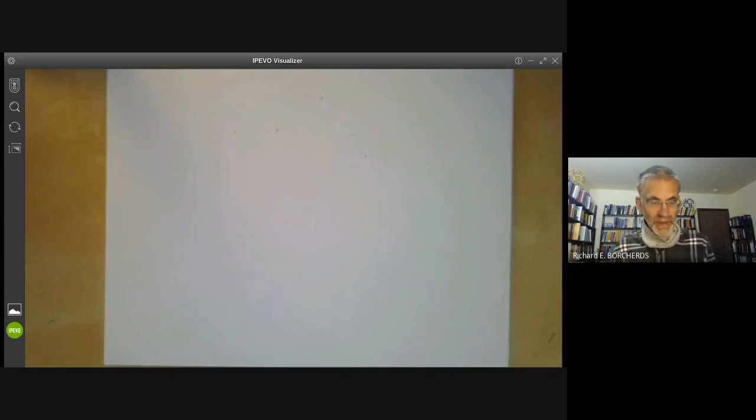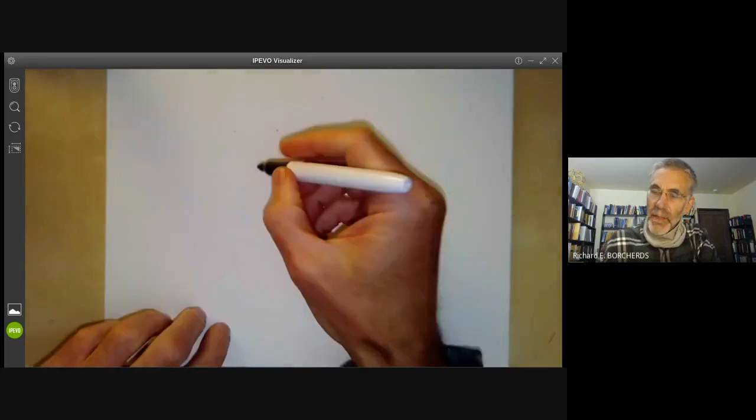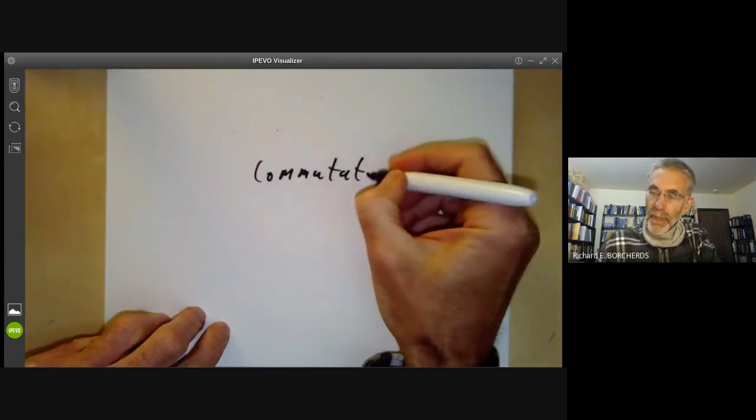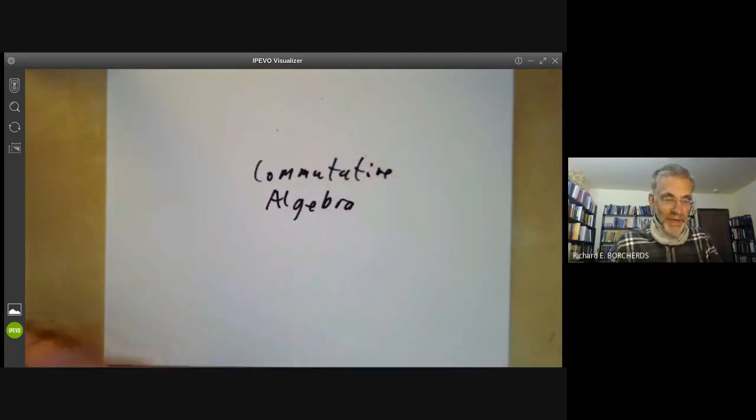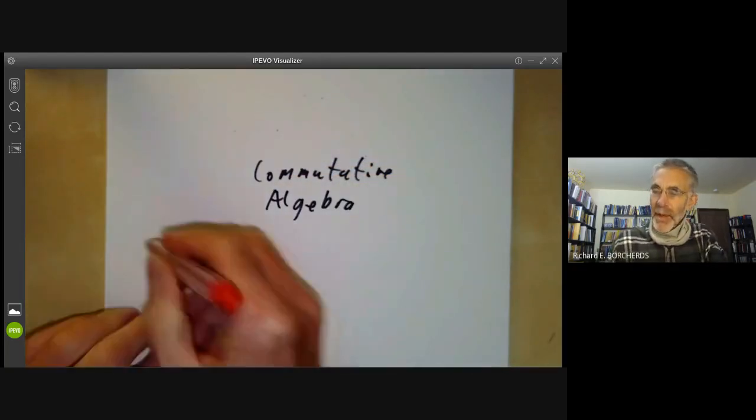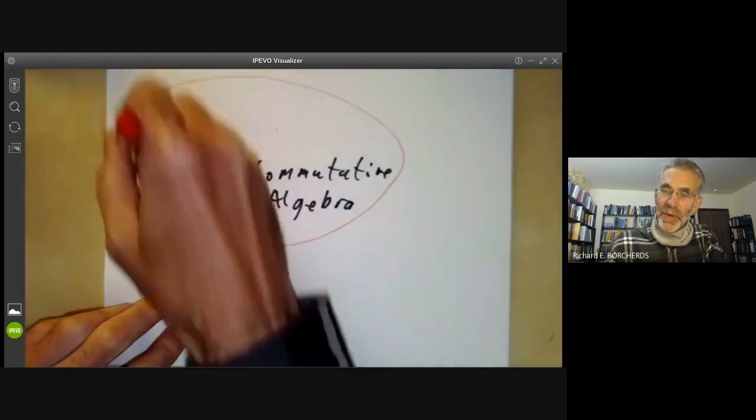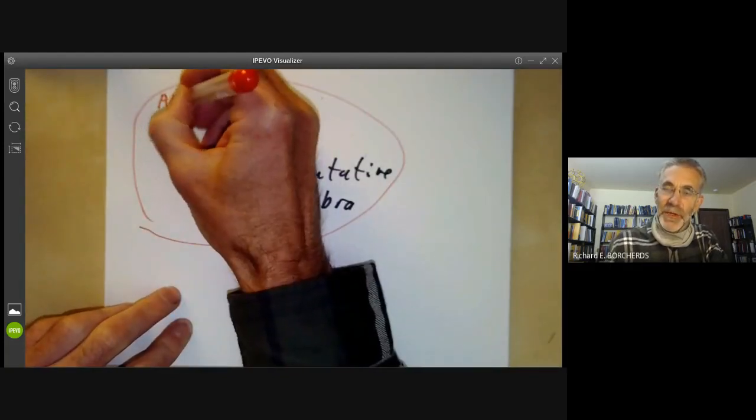Commutative algebra is a sort of service course for various other courses. You can think of commutative algebra as sitting in the middle of various other courses, and here we have algebraic geometry.